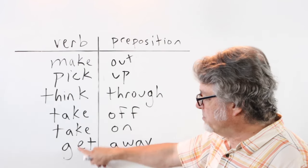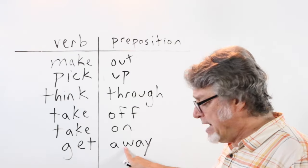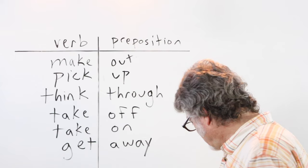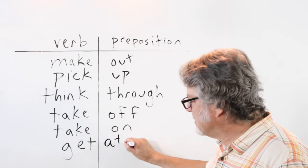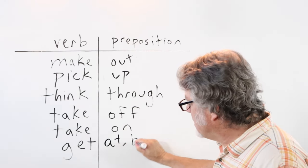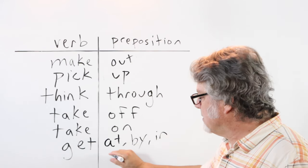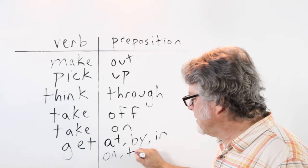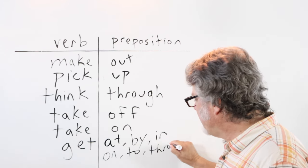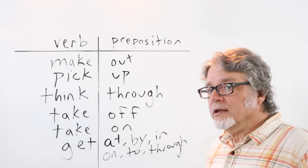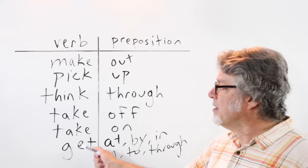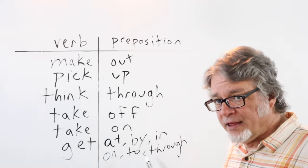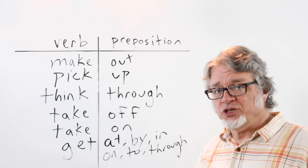The verb get is used with many different prepositions. There's get at, get by, get in, get on, get to, get through. If you look in a dictionary you'll see many phrasal verbs that begin with the verb get and then the preposition changes.